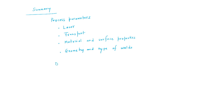The various process parameters we have seen are related to the laser beam, transport of the laser, material and surface properties, and geometry and type of weld. The defects include porosity, cracking, and inclusions. Thank you for listening and watching this video.